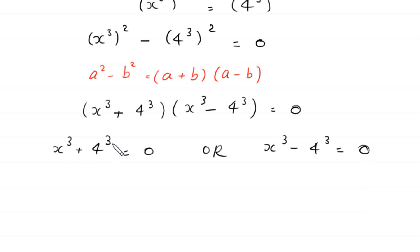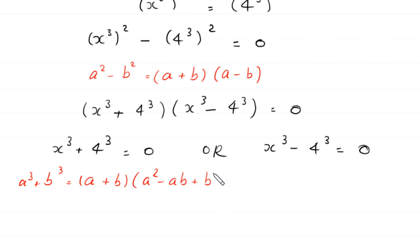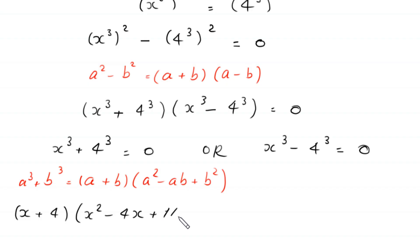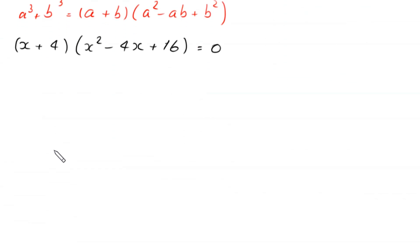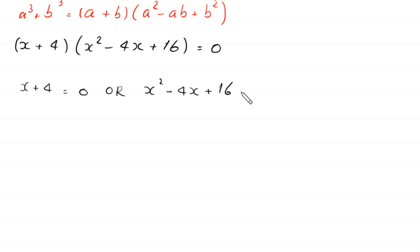For the first case, we have the sum of two cubes, so we use the identity a cubed plus b cubed equals (a + b)(a² − ab + b²). This gives us (x + 4)(x² − 4x + 16) = 0. From here, either x plus 4 equals 0, or x squared minus 4x plus 16 equals 0.